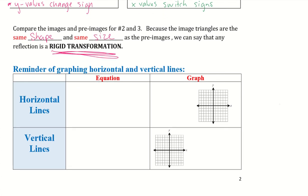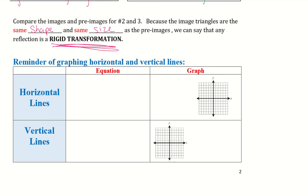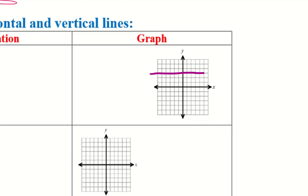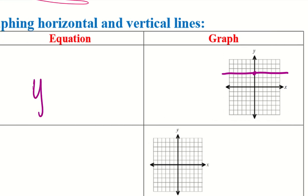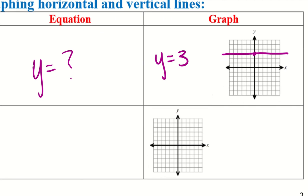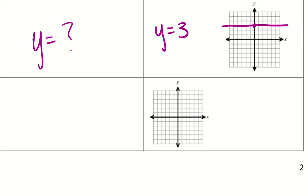Let's take a look at a reminder of graphing horizontal and vertical lines. A horizontal line goes left and right — it goes through my Y-axis, so its equation is Y equals some number. For the example I drew, that would be Y equals 3 because it goes through the third point. A vertical line goes through my X-axis, so its equation is X equals some number — for the graph I drew, that is X equals negative 4.